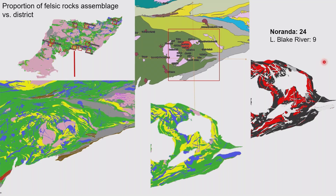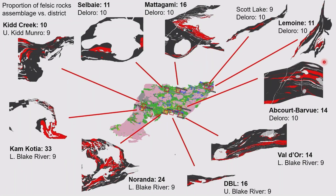It really demonstrates that there's an anomaly in Noranda in terms of all these goodies that you want to see in a VMS environment. You can do this for all the districts, and the general trend you'll see is that some of them will be around the average, but many will have this increased proportion of felsic rocks when you get into the VMS district. Up to 33% felsic rocks in the Kamiskotia camp, and a bunch that are 5 or 4% higher than the average of the assemblage that they belong to.